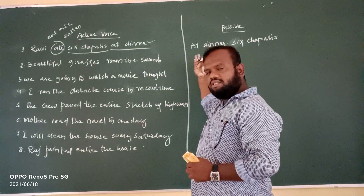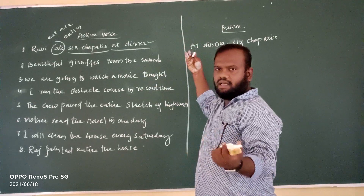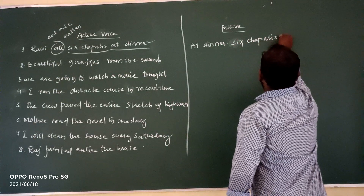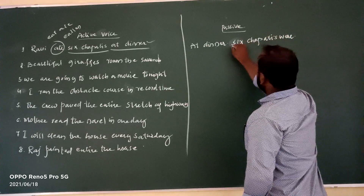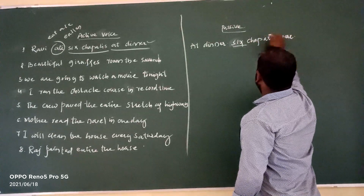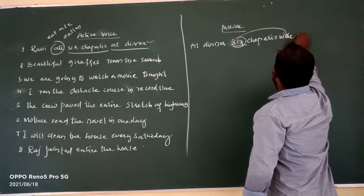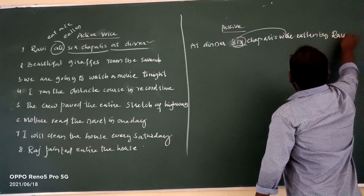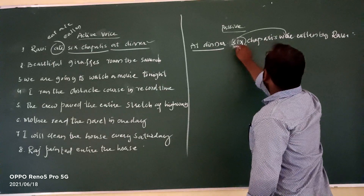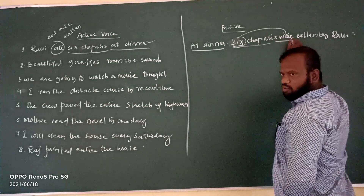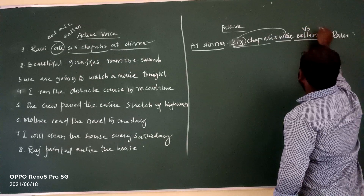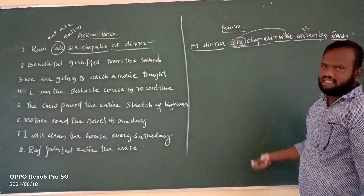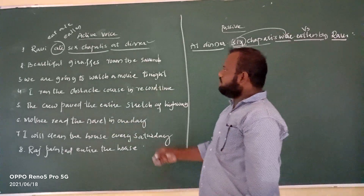As per the formula for past continuous tense, the helping verb is 'was' or 'were.' Since 'six chapatis' is plural, we use 'were.' The structure is: object first, then helping verb, then V3 form, then 'by,' then subject. So the passive form is: 'Six chapatis were eaten by Ravi at dinner.'